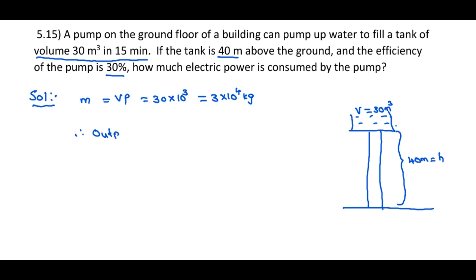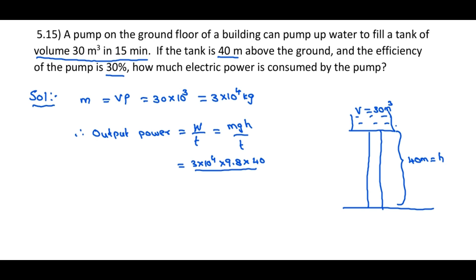The output power equals work done divided by time taken. Work done equals the potential energy, that is mgh divided by T. So this is 3 into 10 to the power 4, g is 9.8, into 40 divided by time taken of 15 minutes, that is 15 into 60 seconds in SI units. This gives 39,200 divided by 3 Watts.